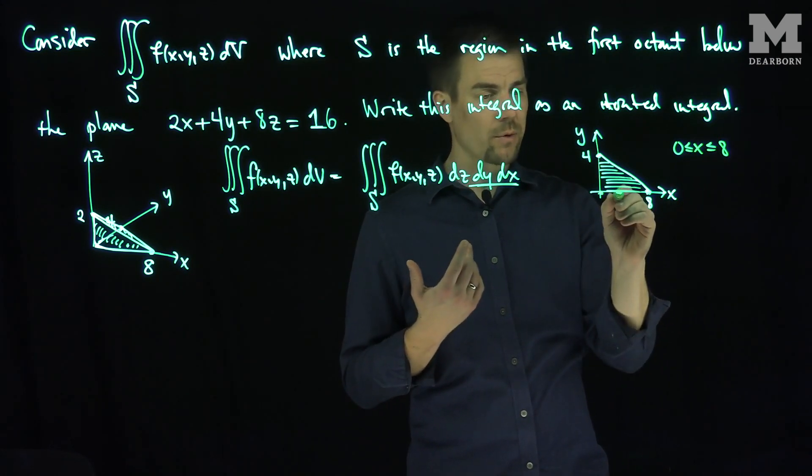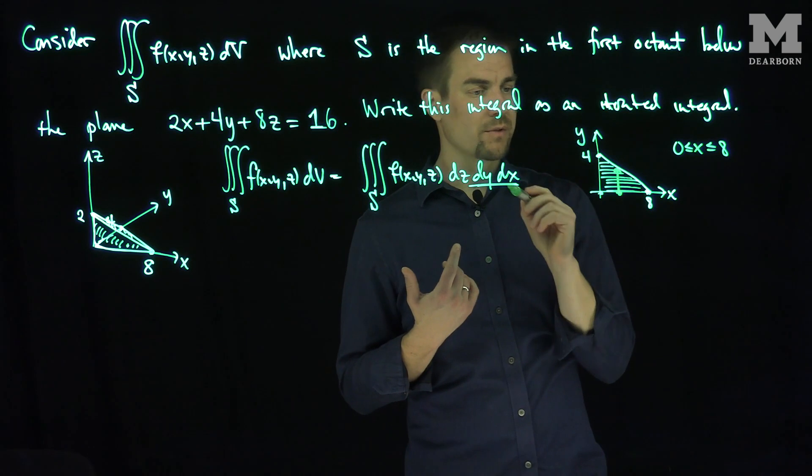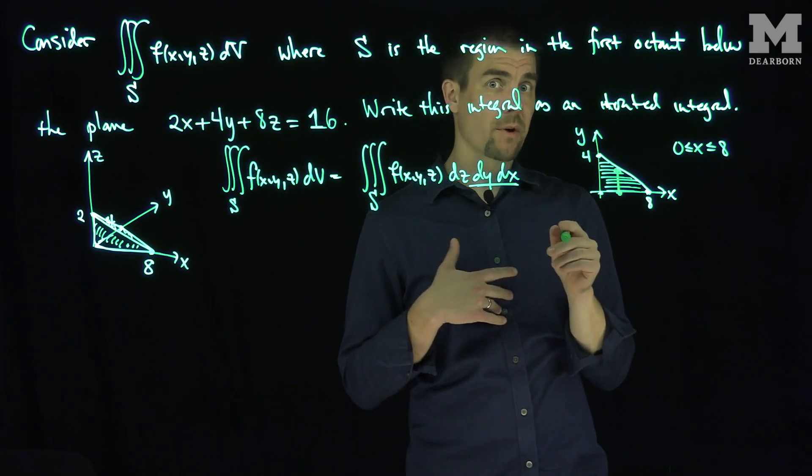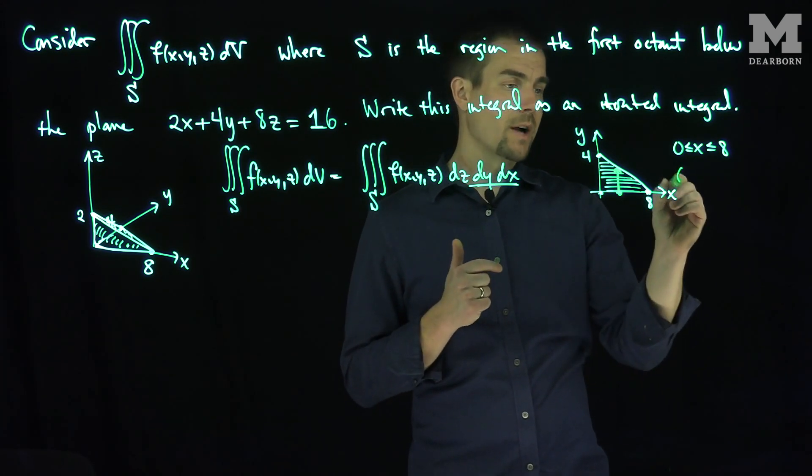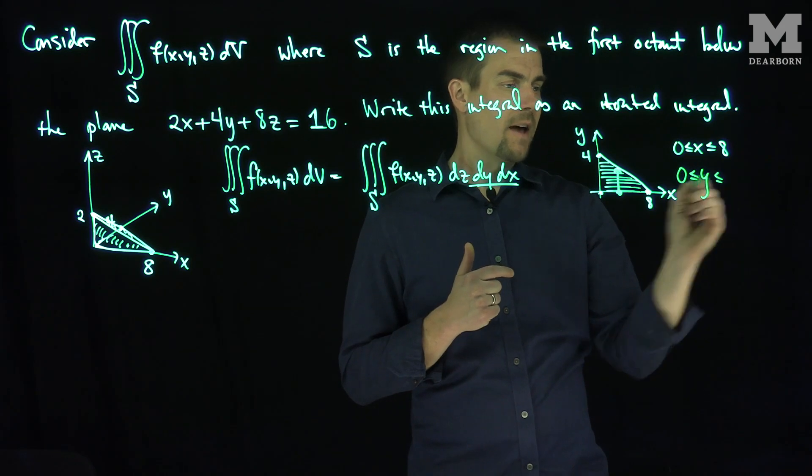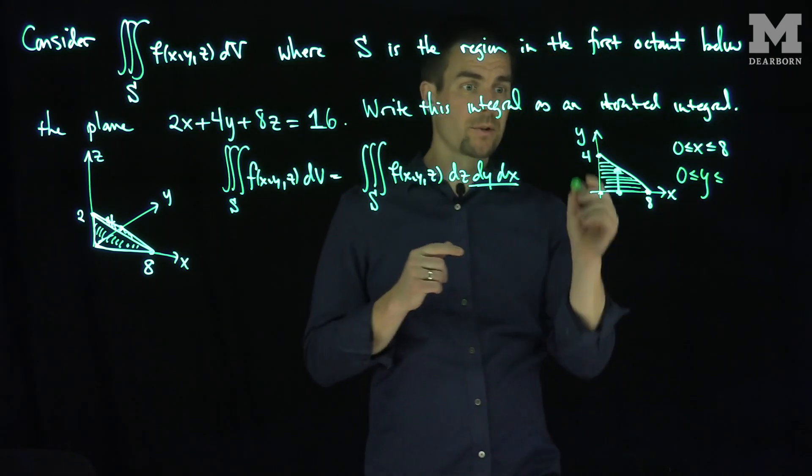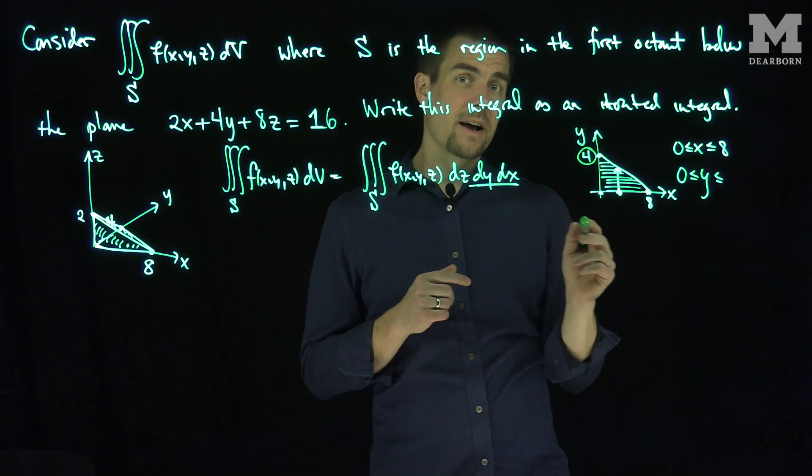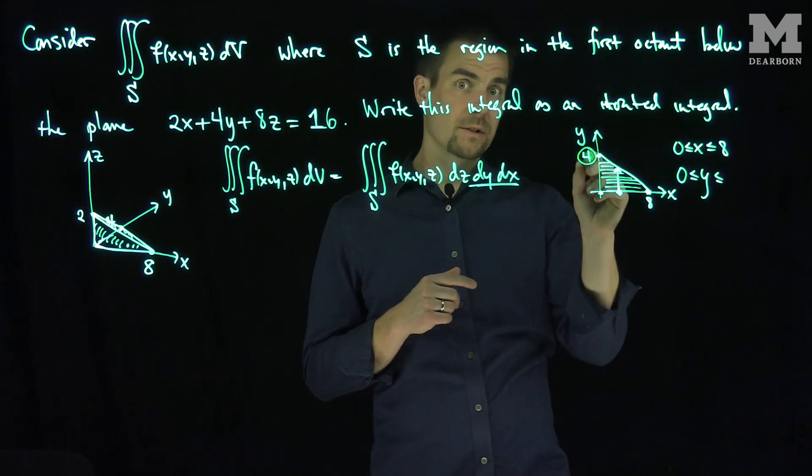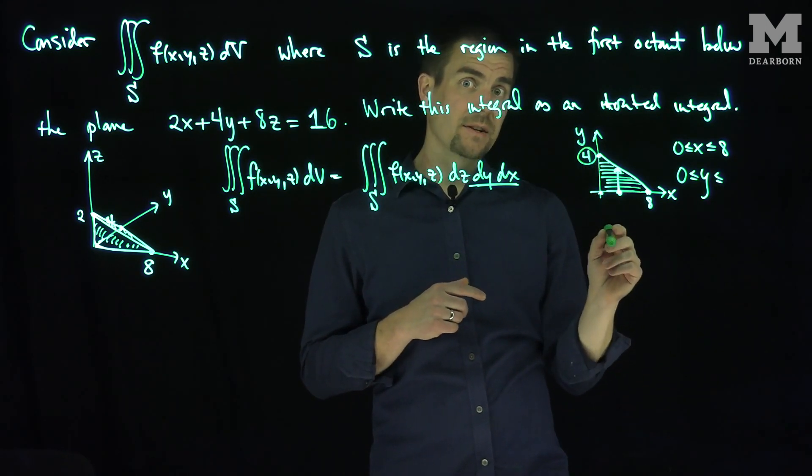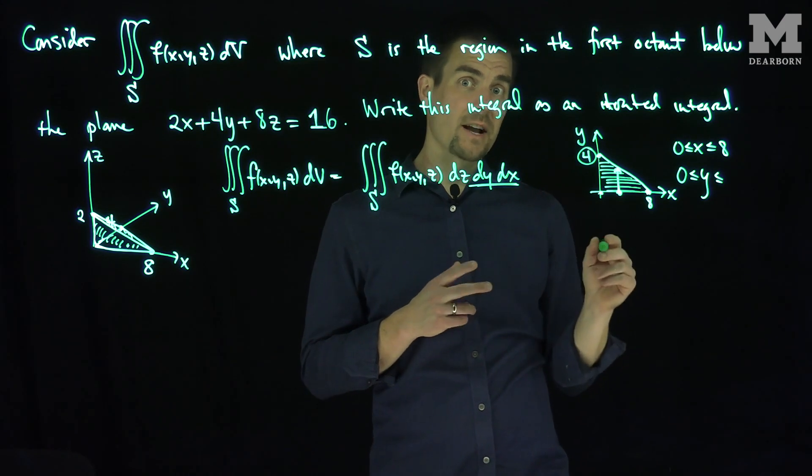x goes between 0 and 8. What does y go between? y goes between 0 and the equation in this line over here. Now the question is, how do we find the equation in this line? Well, this line, so y is going to go between 0 and then the equation in this line. Well, I have the y-intercept. The y-intercept is 4, and I have the slope. So the rise is 4 over the run is negative 8. So I have 4 over negative 8, or negative 1 half.